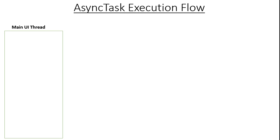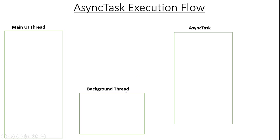Here I have created a simple animation that will demonstrate how AsyncTask executes when you start it. We have a main UI thread, the AsyncTask, and a background thread. To start an AsyncTask, you create an object of a class that extends AsyncTask and call the execute method using that object. Here I create an object of the class that extends AsyncTask and call the execute method.